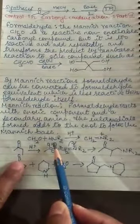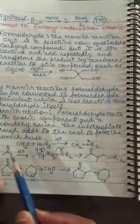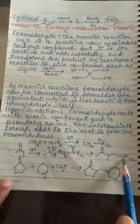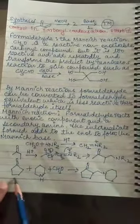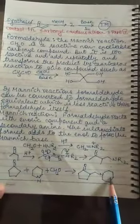Now what is the Mannich reaction? Here we can say that Mannich reaction formaldehyde with the secondary amine forms an intermediate which reacts with the carbonyl compound giving the Mannich bases.